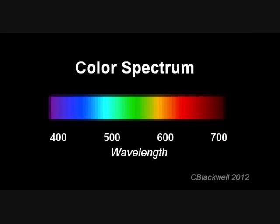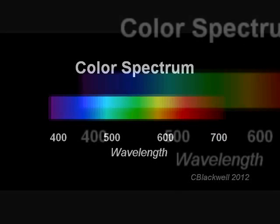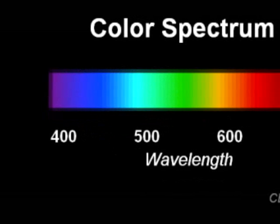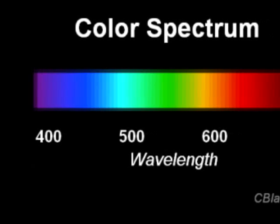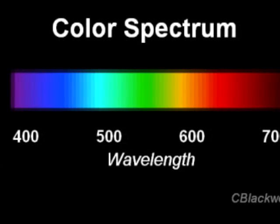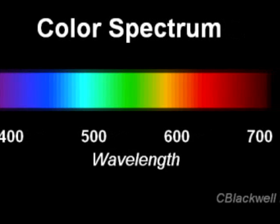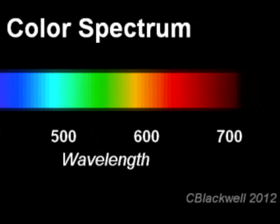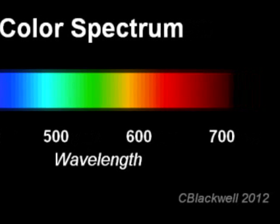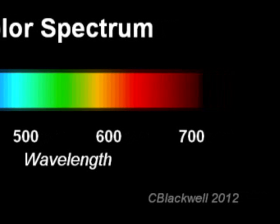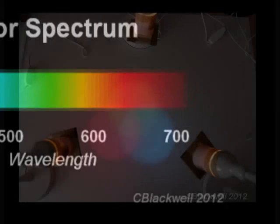The eye is sensitive to a range of wavelengths of light. If only one wavelength is present, like a pure spectral color, then we perceive that. If several wavelengths arrive together, like sunlight, the visual system adds them together and decides what the resultant color is. Adding lights of different colors together to create a new color is called additive color mixing.